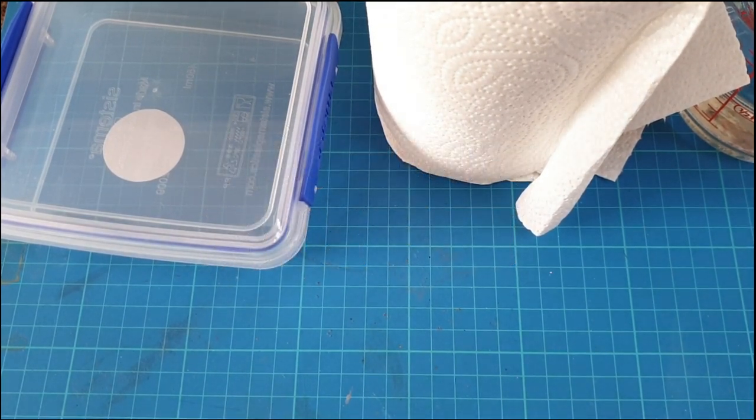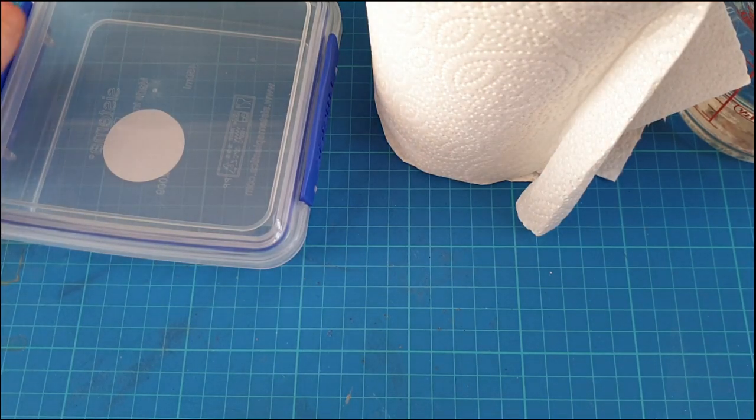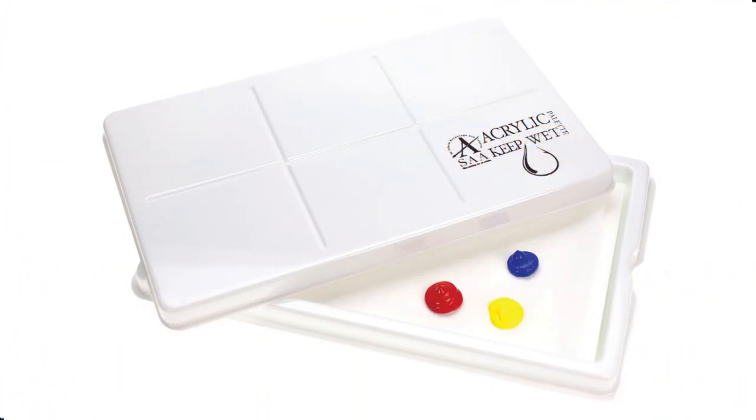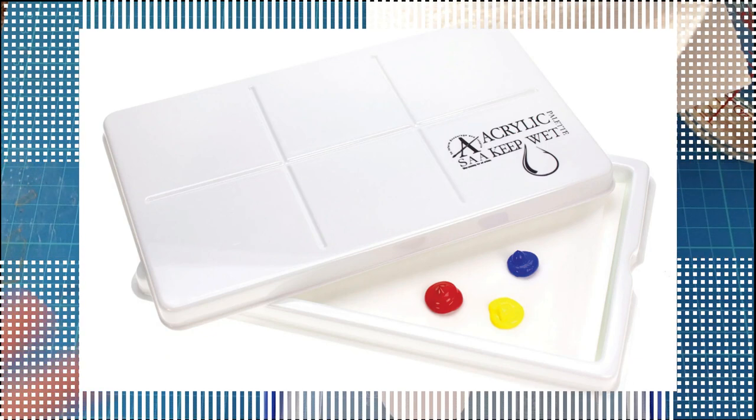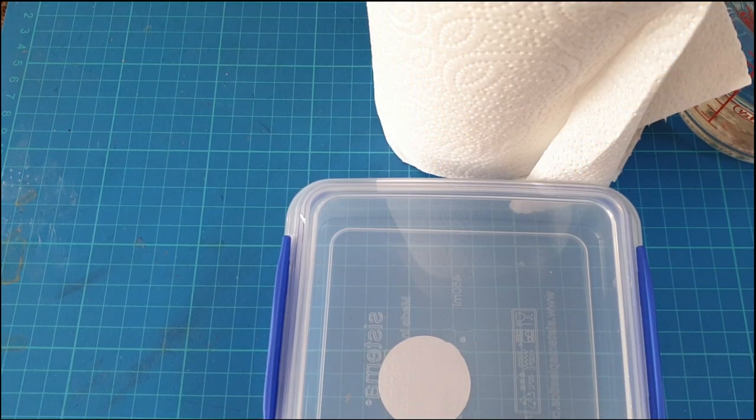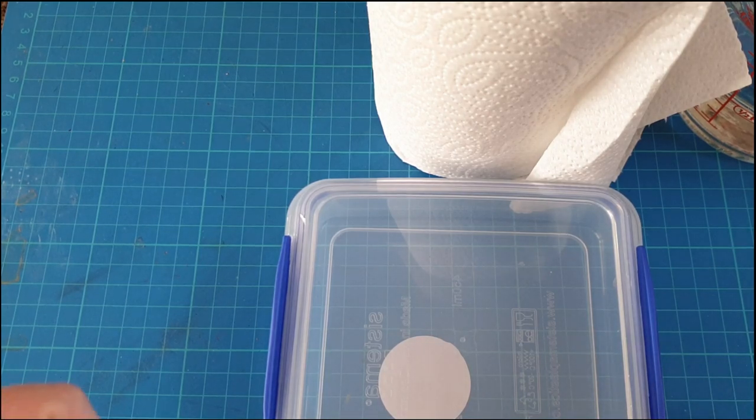In this video we're going to make what's commonly known as a wet palette. You can buy them off Amazon and they come with sponges and papers and all that kind of thing, but it's expensive and I don't have a lot of money.